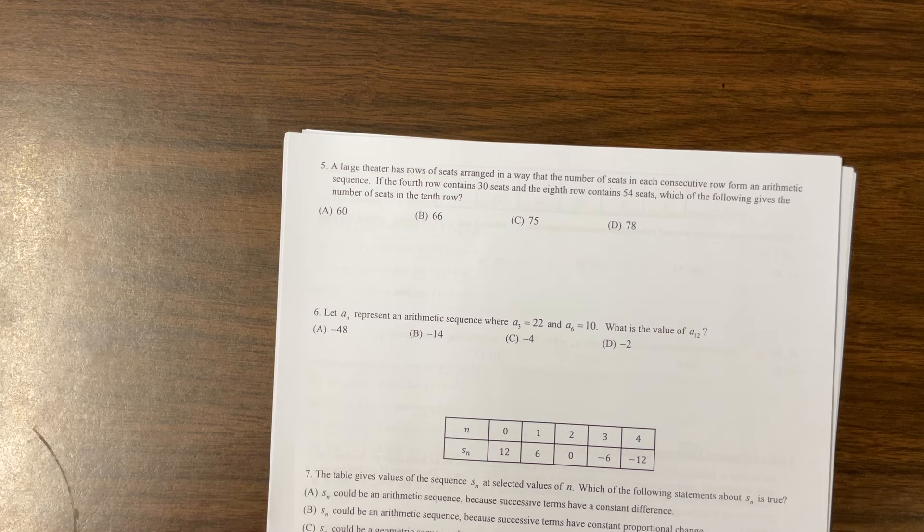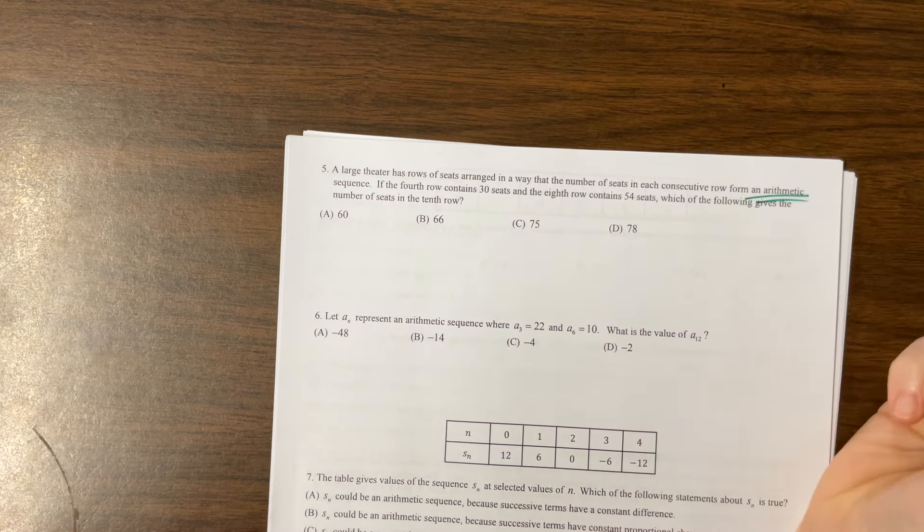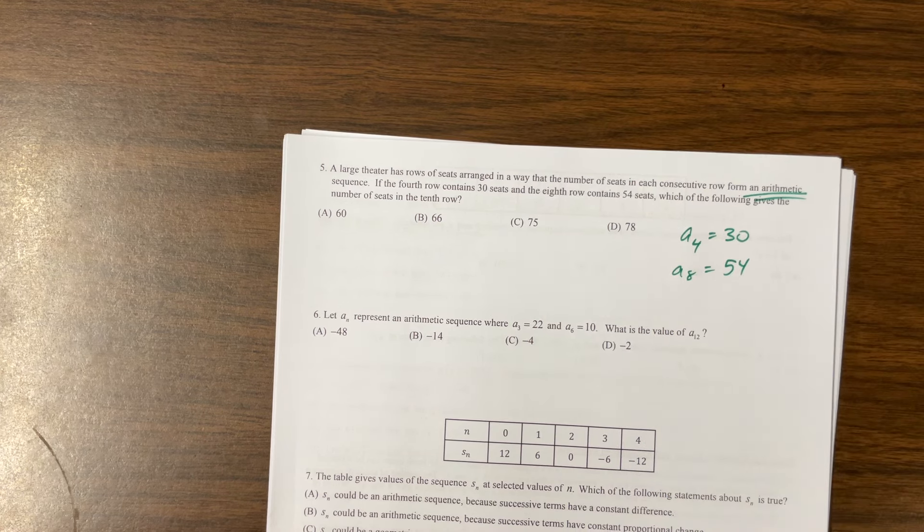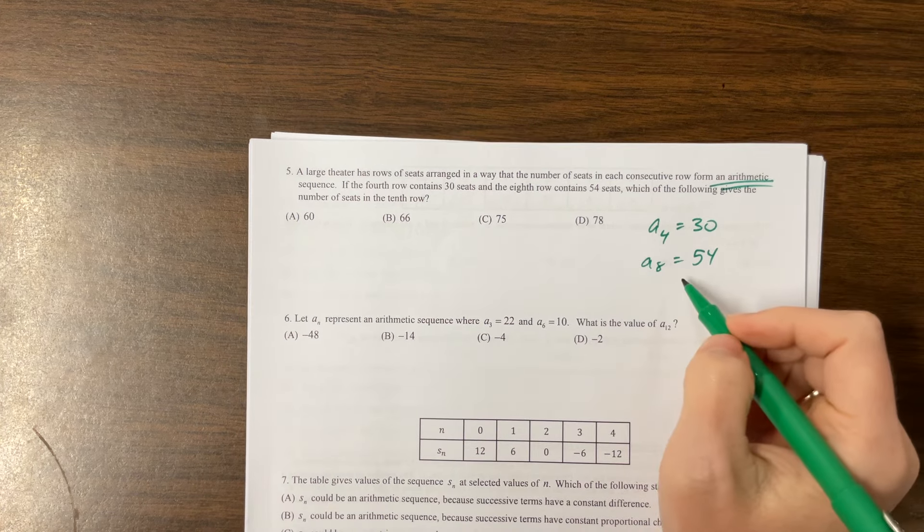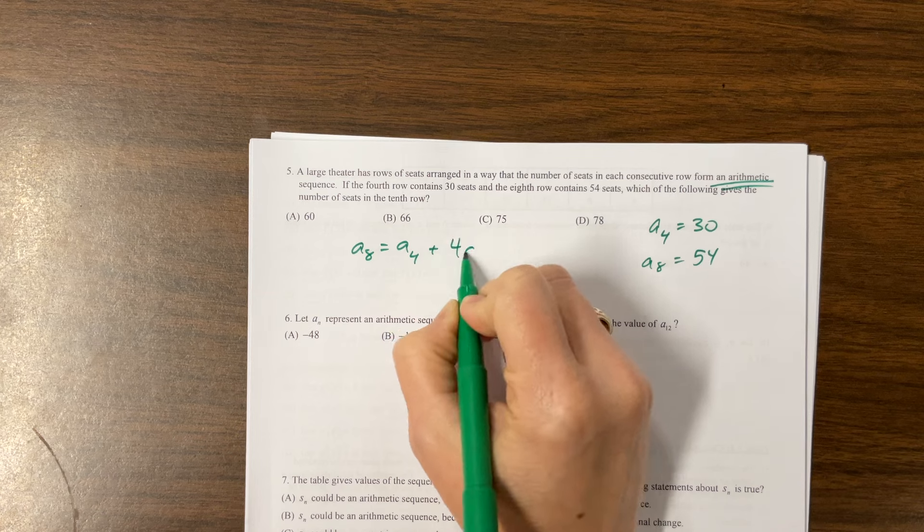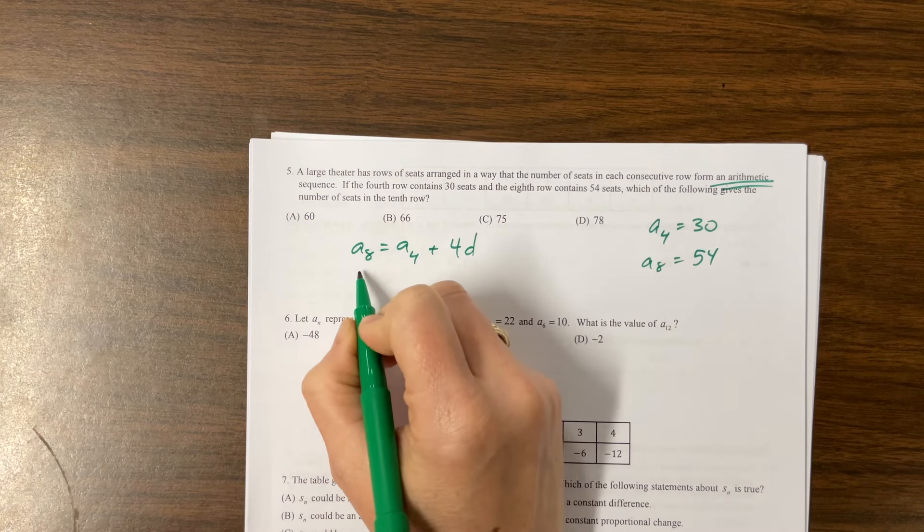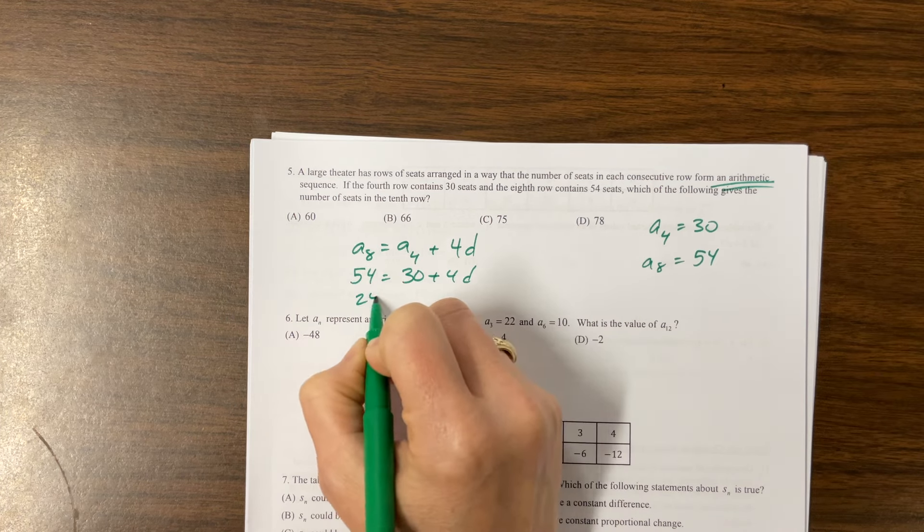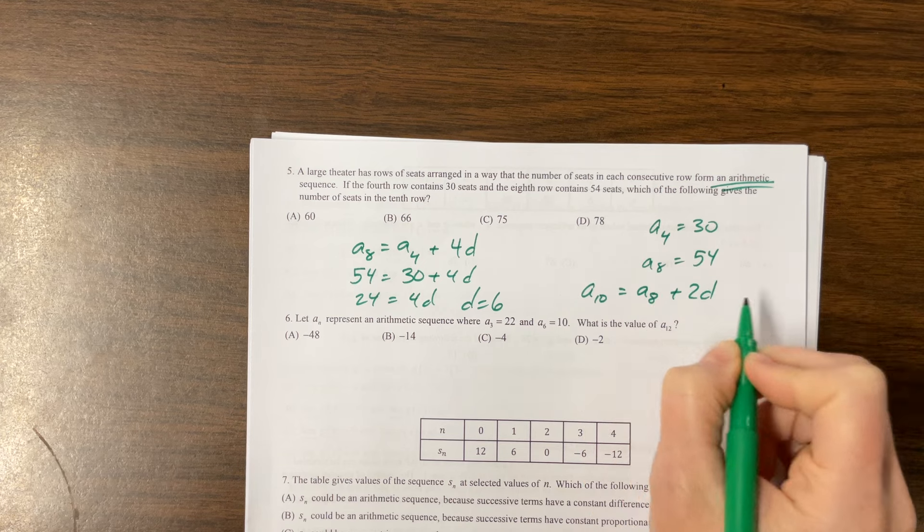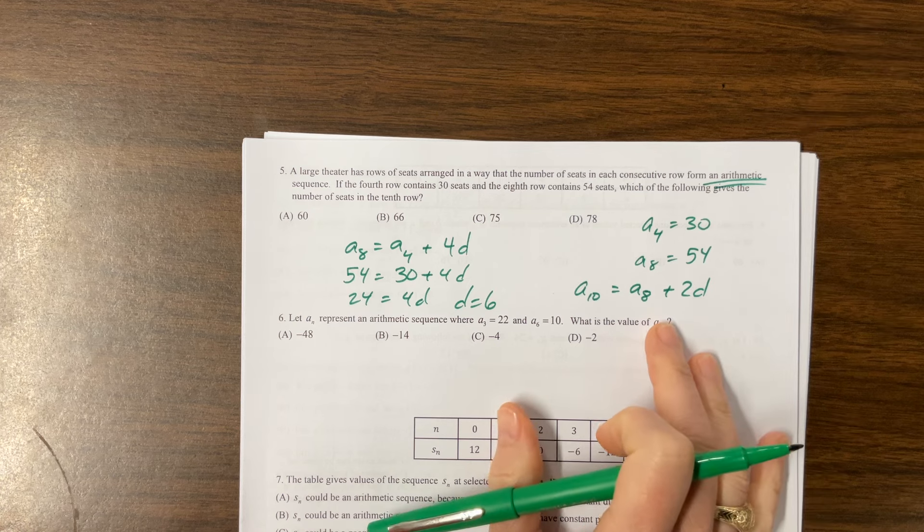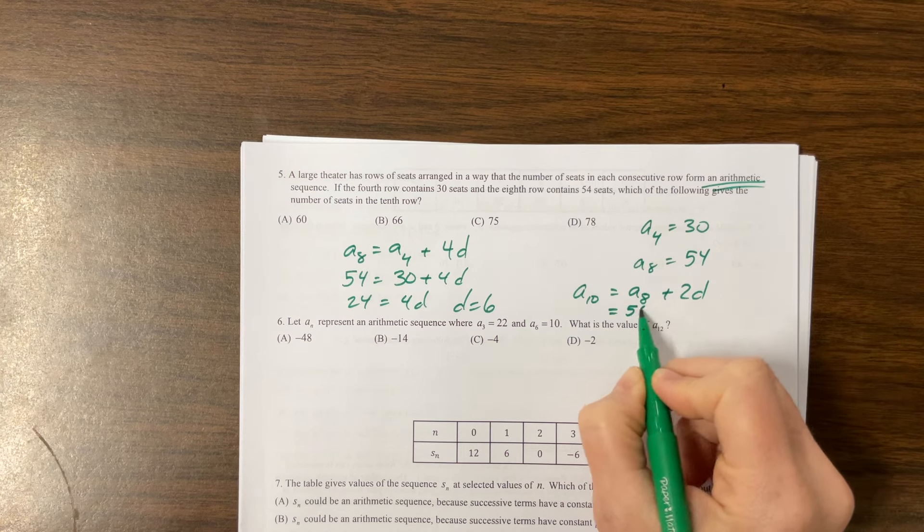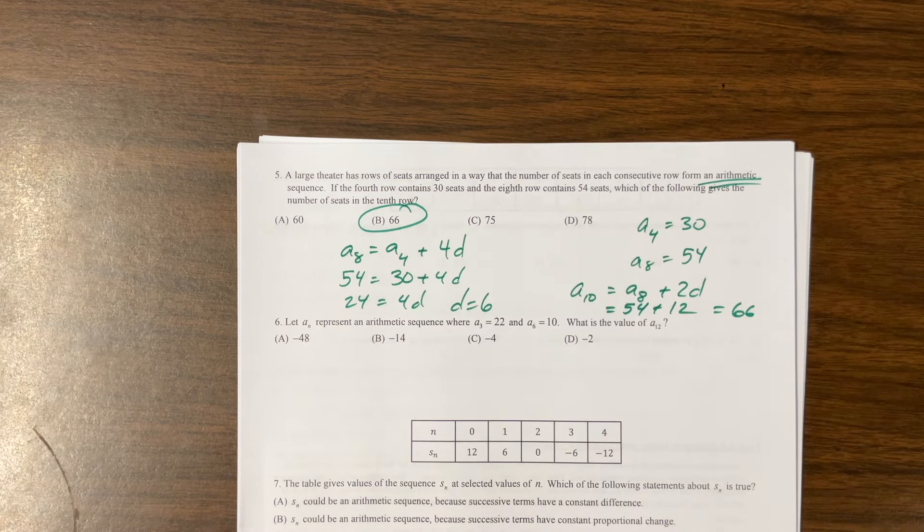A large theater has rows of seats arranged in a way the number of seats in each consecutive rows forms an arithmetic. Arithmetic means we have a common difference. If the fourth row contains, a sub four equals 30 and the eighth row, a sub eight equals 54, which of the following gives the number of seats in the 10th row. A few ways to think about this, but we could say, a sub eight would be equal to a sub four plus I have to add the common difference four more times. So I know this is 54 is equal to 30 plus four D. Subtract, 24 is equal to four D. D is equal to six. Then I could say, a sub 10 is equal to a sub eight plus that common difference two more times. So if it's 54 plus two times six is 12, so this is equal to 66 and that's an answer choice.